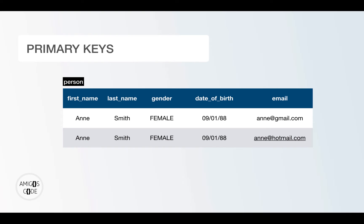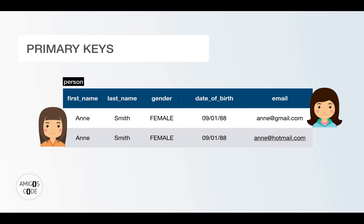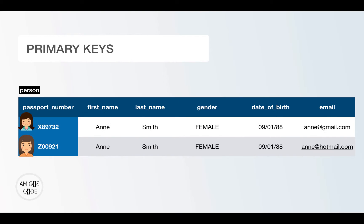Now, if you were to uniquely identify, for example, the first row, how would you do that? Well, in this table it's impossible, because there is no column that can be uniquely used to identify someone. And this is where primary keys come into play.